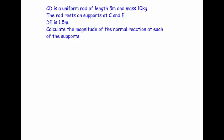This is our first example on moments for uniform rods. CD is a uniform rod of length 5 meters and a mass of 10 kilograms. It rests on supports at C and E, and DE is 1.5 meters. Calculate the magnitude of the normal reaction at each of the supports.